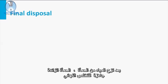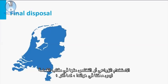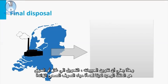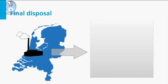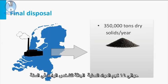After sludge dewatering, the excess sludge is ready for final disposal. Agricultural use or disposal in landfills is not possible in the Netherlands. This means that pelletalization, gasification, or incineration is the only outlet for excess sewage sludge. In the Netherlands, we produce about 350,000 tons of dry solids per year, which is about 16 kilograms of dry solids per person per year.